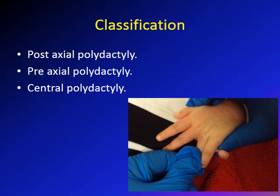The classification of polydactyly includes post-axial polydactyly, pre-axial polydactyly, and central polydactyly. Pre-axial means related to the thumb and the radius, post-axial means related to the ulna and the small finger, and central is related to the central three fingers. By far the most common is post-axial polydactyly.